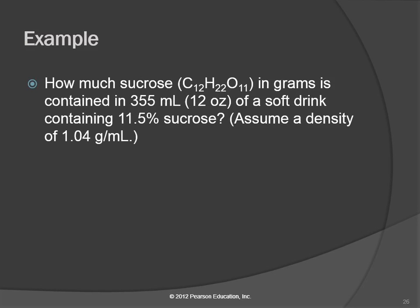So let's look at an example. How much sucrose in grams is contained in 355 milliliters of a soft drink containing 11.5% sucrose, assume a density of 1.04 grams per milliliter.